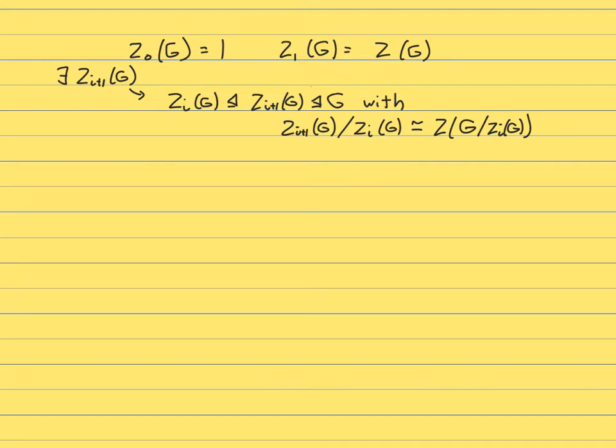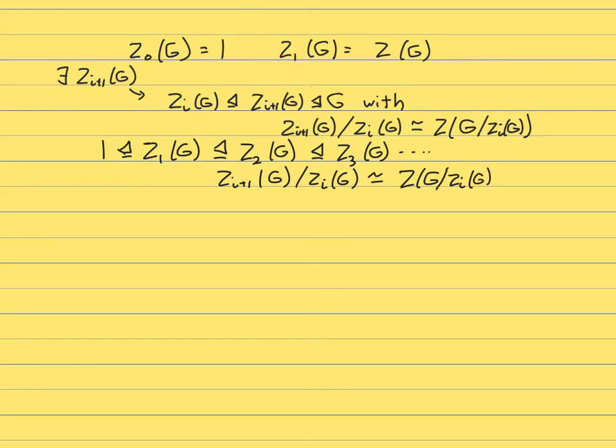So the whole idea is that I'm just trying to extend this sequence over and over. And so if I do this, I'm going to end up with this chain of normal subgroups with the feature that each quotient is isomorphic to a center, which is an abelian group. So congratulations, we just proved that we can construct such a chain.